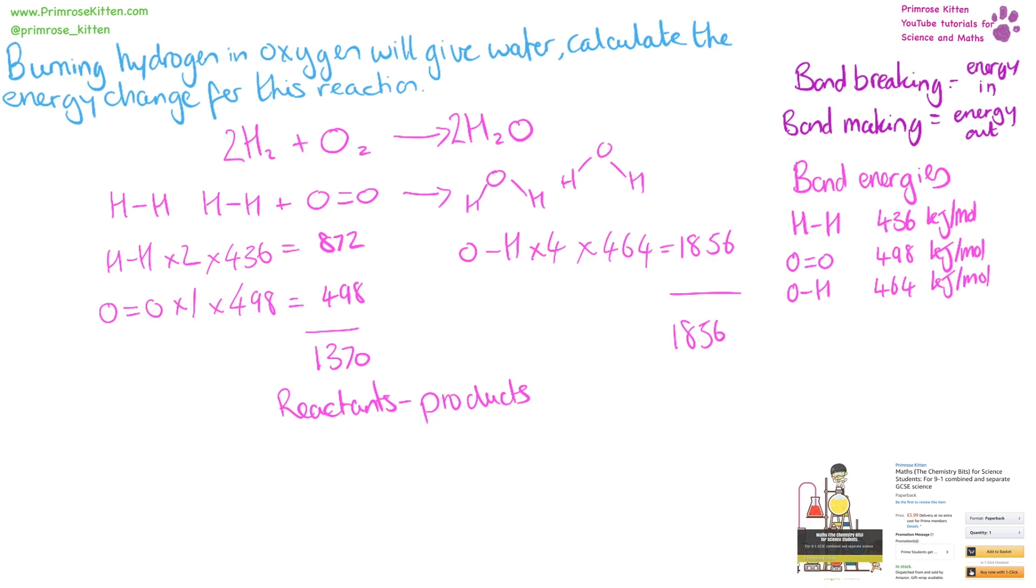Now we need to do the energy of the reactants minus the energy of the products. So one three seven zero minus one eight five six, giving us minus four eight six kilojoules per mole. In this type of equation, if you've got the symbol wrong, you'd probably only lose one mark. Having a negative sign in front of it tells us it is exothermic. So any reaction that is burning, you can check yourself, because it should always be exothermic.